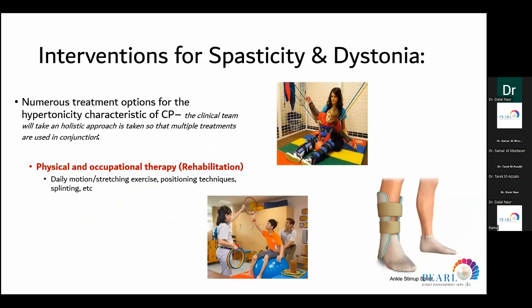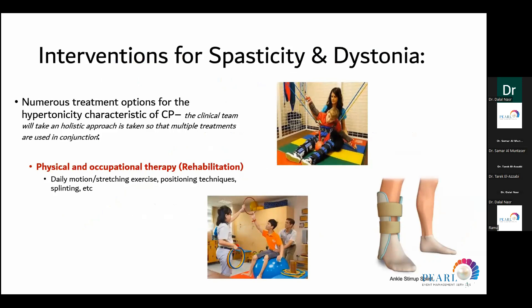The main cornerstone of treatment is rehabilitation — daily, regular physiotherapy and occupational therapy. The first line of management, along with physiotherapy, will be medications tailored to the patient's needs, whether spasticity or dystonia. Medications include baclofen, benzodiazepine, clonidine, carbidopa, gabapentin, and trihexyphenidyl.